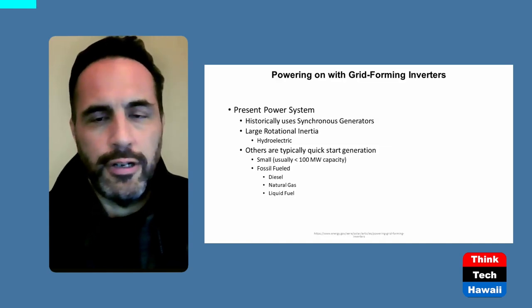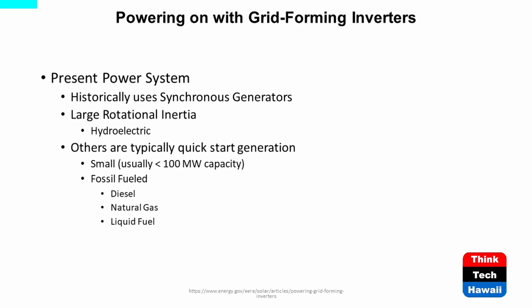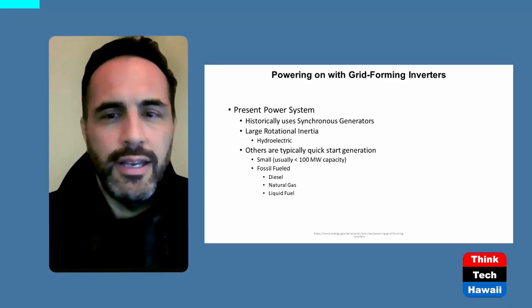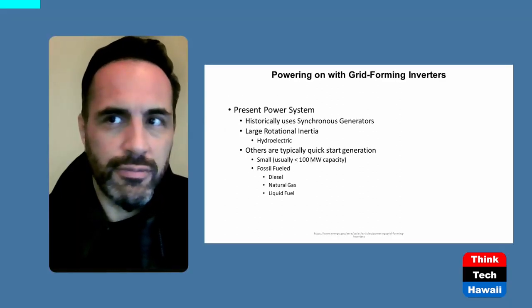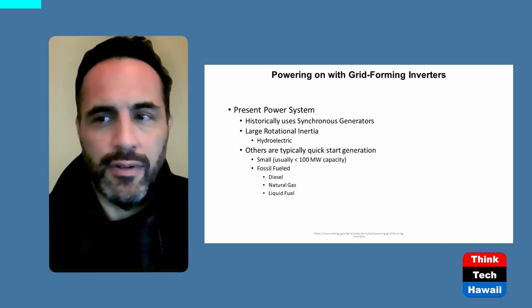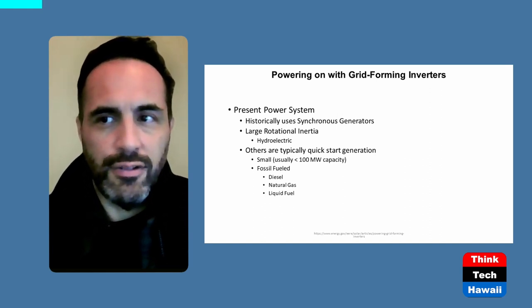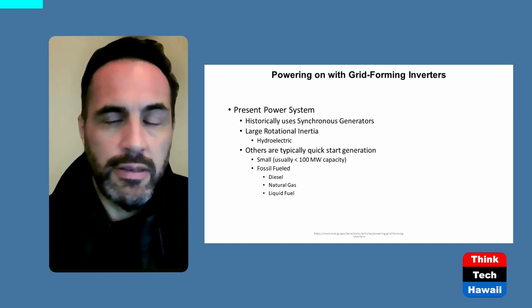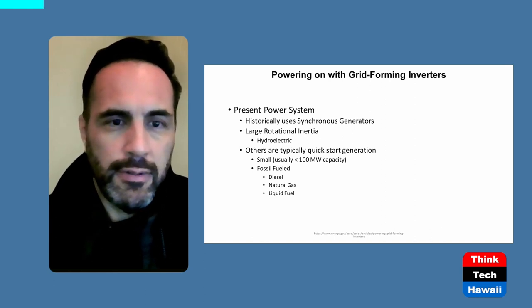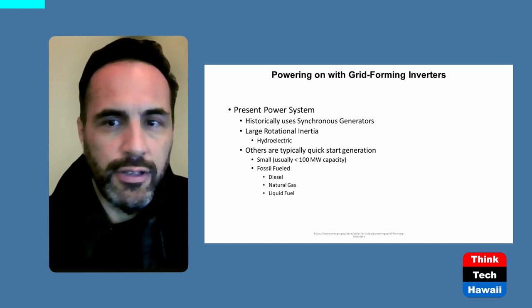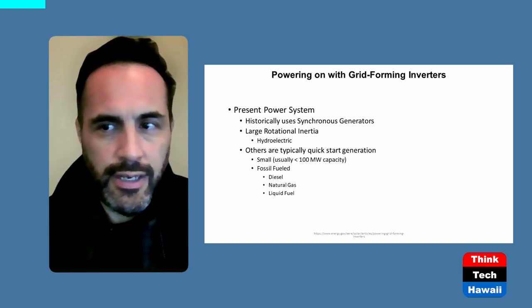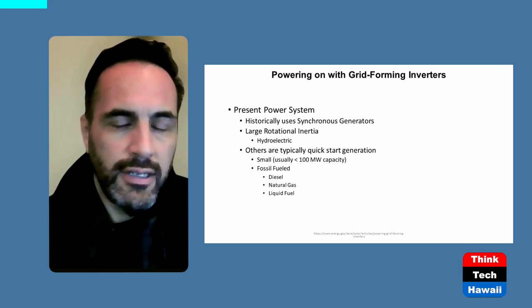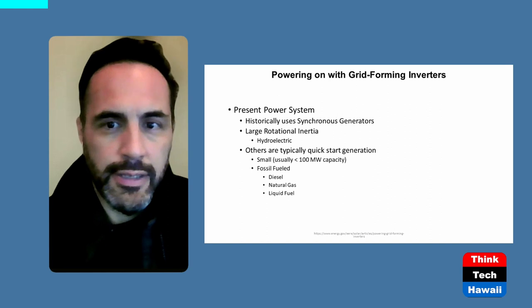When we talk about generation, this slide is from a previous show on grid-forming inverters and solar sites. It came out of a discussion regarding the deployment of solar facilities, wind, and all sorts of renewable resources to generate power. The problem arises when you begin to lose what they call system inertia, and that loss of system inertia has a really negative impact on grid reliability.